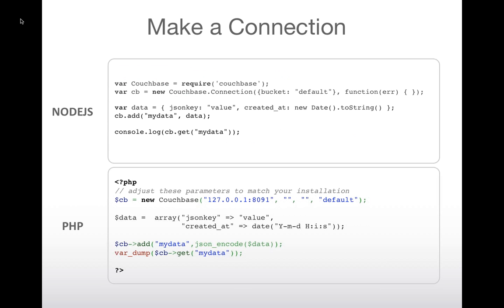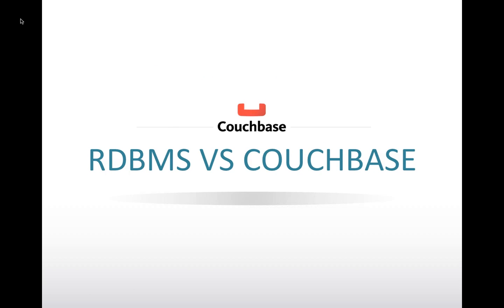For Node.js, JSON is a first-class citizen, so there isn't any transcoding — they're native objects. Very similar: I'm requiring the Couchbase SDK, making a connection, creating a hash/dictionary, then adding the data and pulling it back out. PHP is again very similar. So making a connection to Couchbase is pretty simply how you do it in all these different languages.